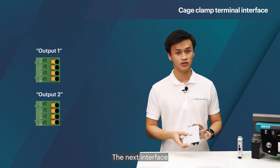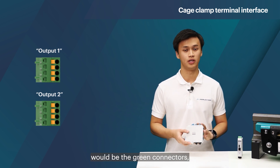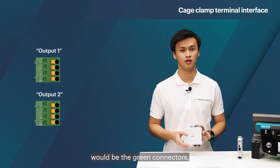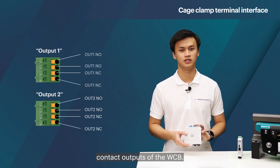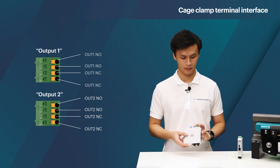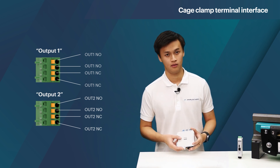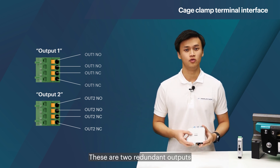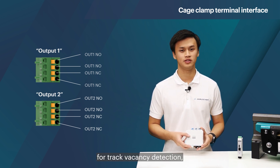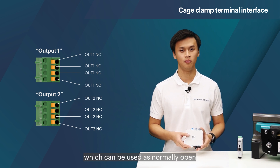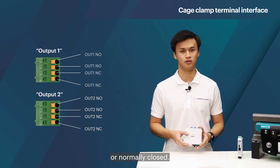The next interface would be the green connectors, which are the discrete dry contact outputs of the WCB. These are two redundant outputs for track vacancy detection, which can be used as normally open or normally closed.